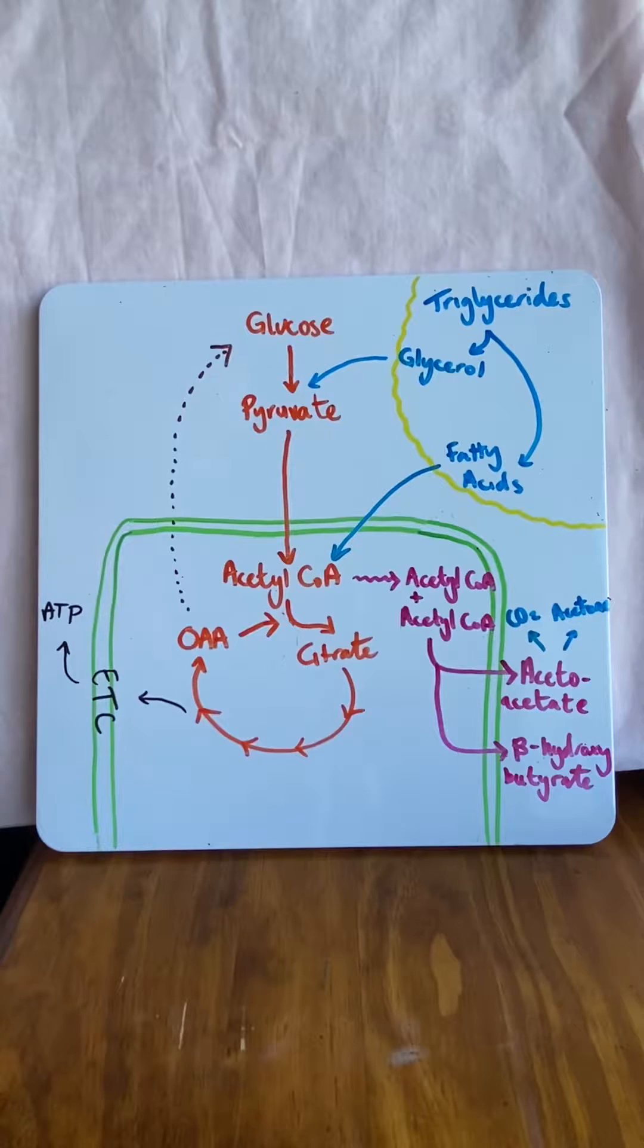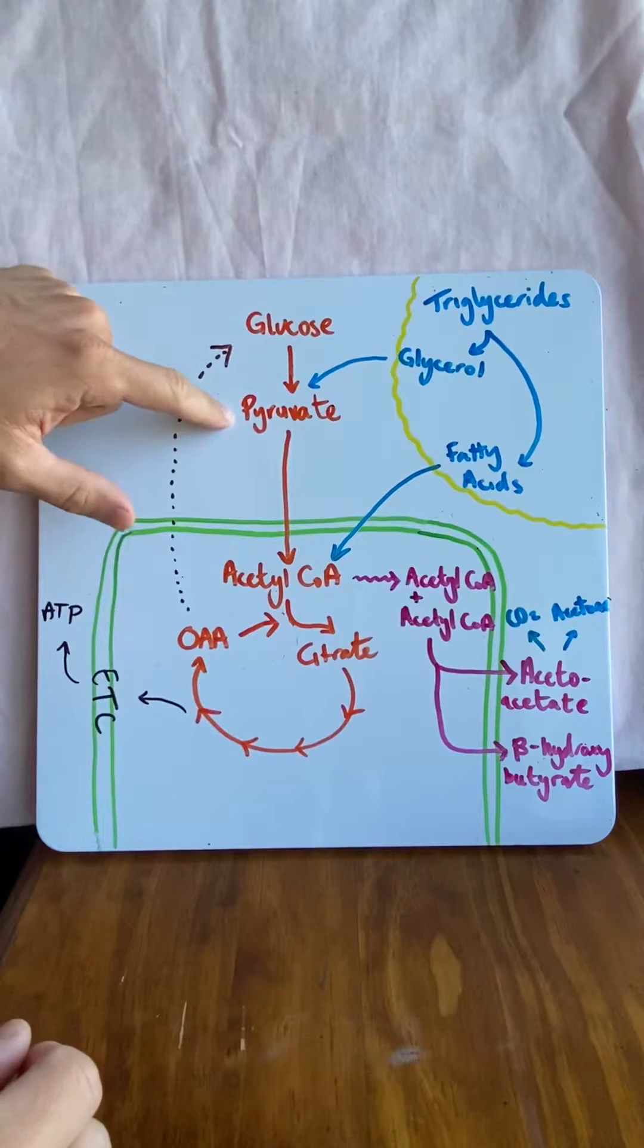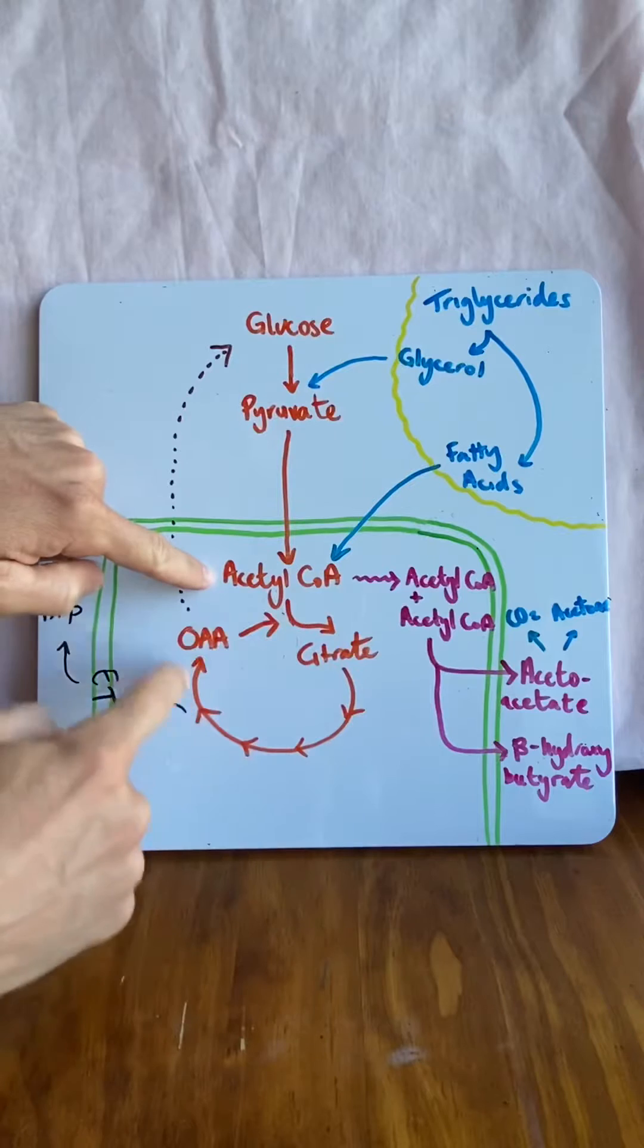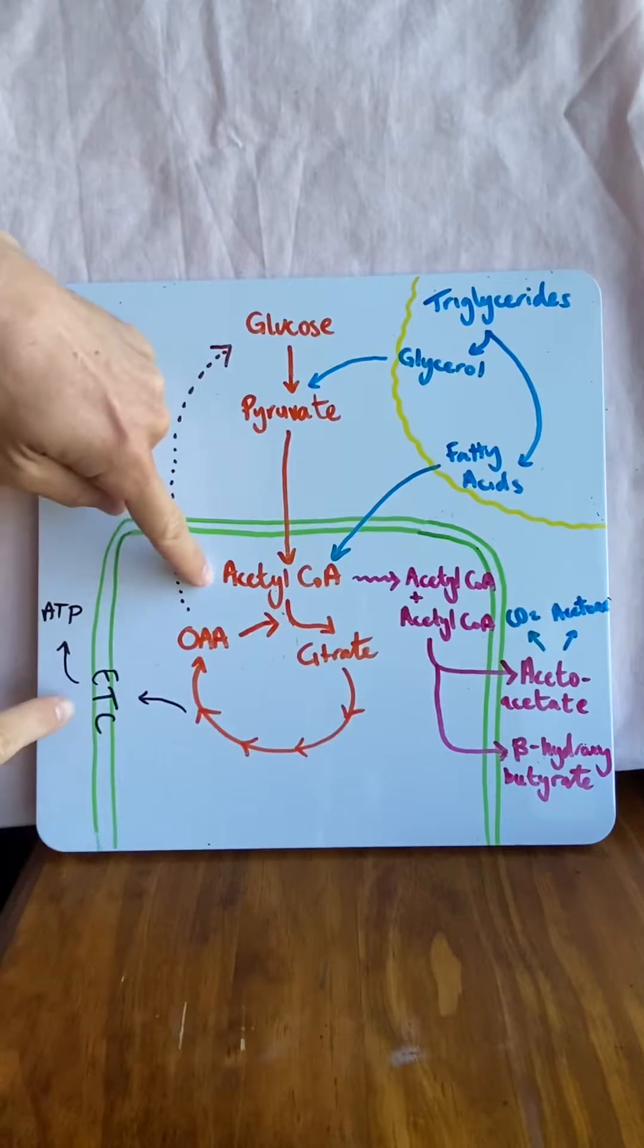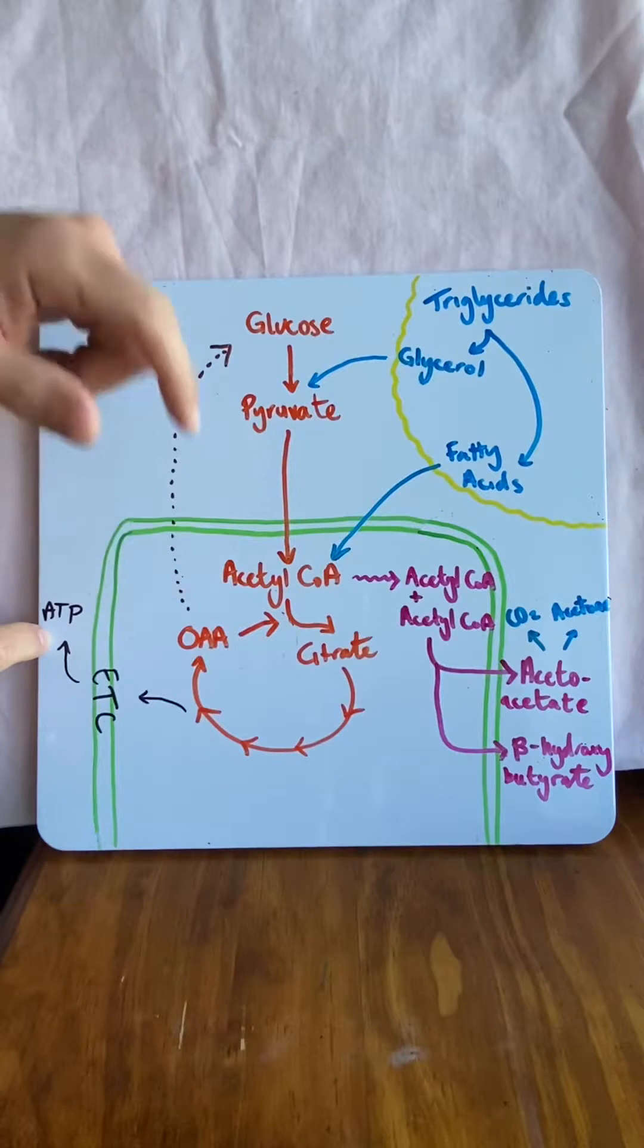When you ingest carbohydrates, they break down into glucose. Glucose undergoes glycolysis to form pyruvate that jumps into the mitochondria to form acetyl-CoA. This undergoes the Krebs cycle to produce a number of products that go to the electron transport chain, which produce a whole bunch of ATP in the form of energy. Brilliant.